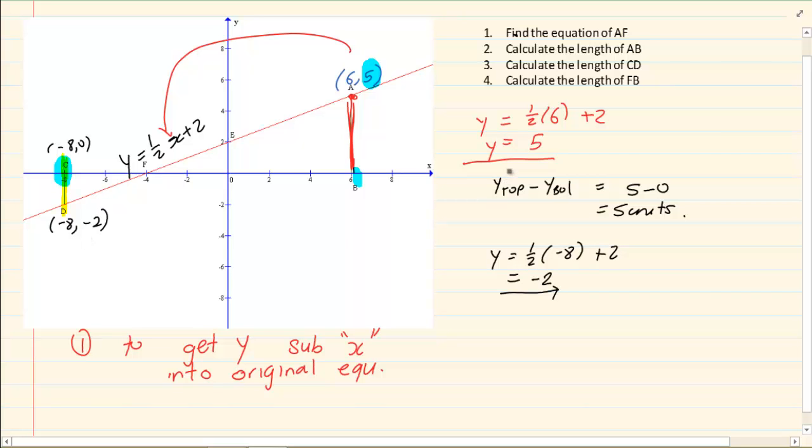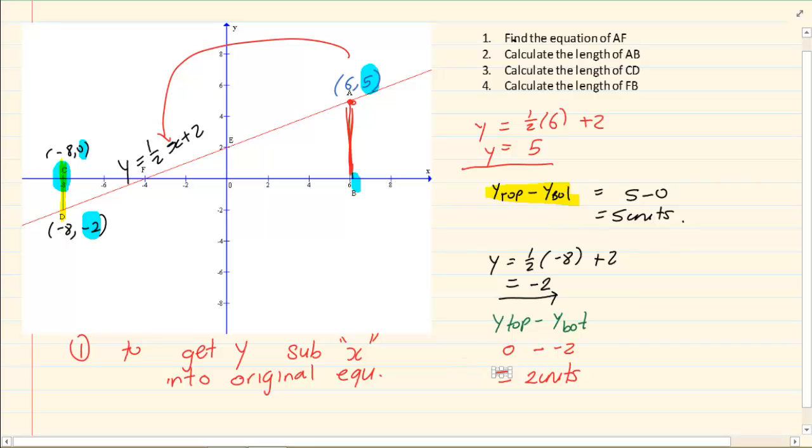But now look at what the equation says. The equation says y of the top minus y of the bottom. Now what is the top y value? The top y value is 0. So I have 0 minus (-2), which is equal to 2 units. So what is the length of CD? The length of CD is equal to 2 units.